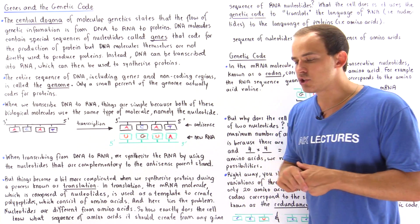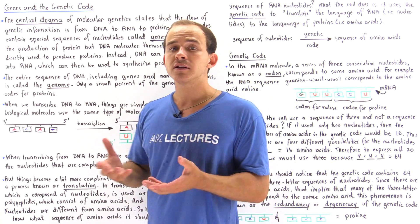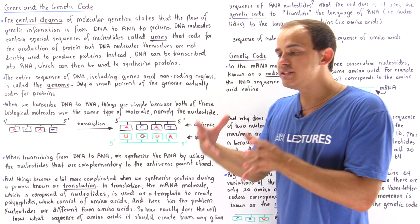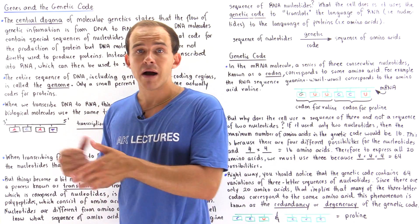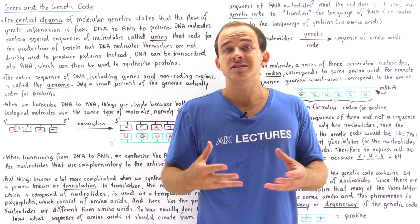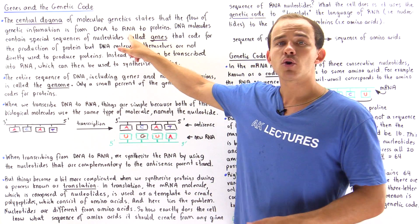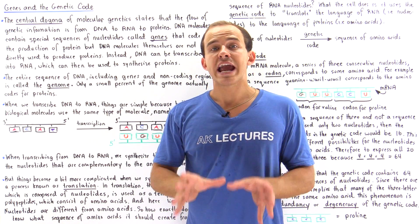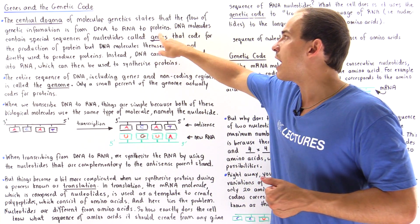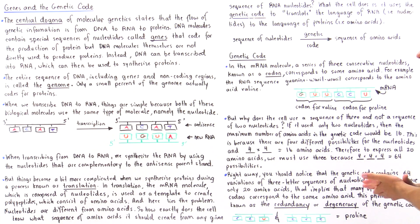Even though DNA molecules contain genes, DNA molecules themselves are not directly used in protein synthesis. What happens is the genes in our DNA molecules are transcribed into RNA molecules. We basically transfer the genetic information from our DNA to our RNA, and then those RNA molecules are used by ribosomes to form our proteins by using the genetic code.